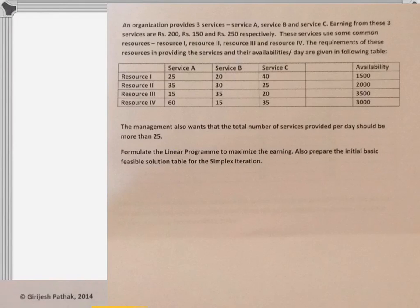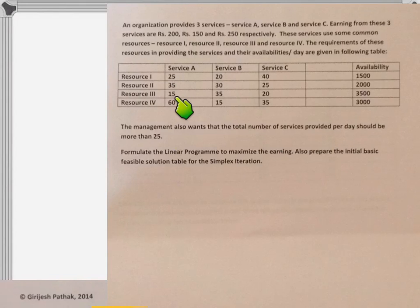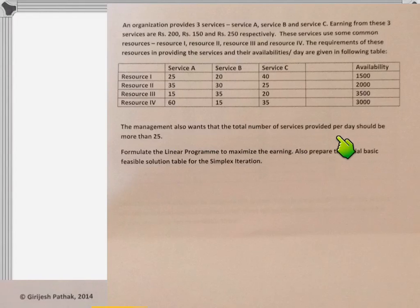In the linear program, we will have the objective function to maximize the earning, so we need to have one equation for earning. We will have few constraints — the constraints from the resources side, that is the requirement of resources should be less than or equal to availability. And the services which we provide, their sum should be greater than or equal to 26, because the question asks for more than 25.